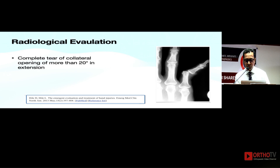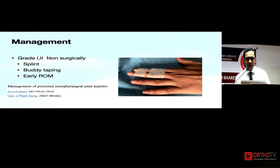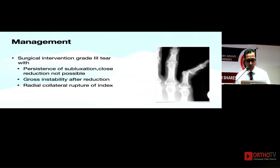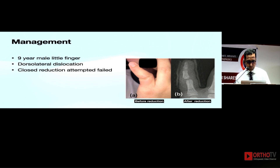Radiologically on X-ray you may find some avulsion fractures and joint subluxation. If you have a complete tear of the collateral you will have complete dislocation. Coming to the management: grade 1 and grade 2 are preferably treated non-surgically because they are stable. If you reduce them, a grade 2 injury will be stable in full flexion and full extension and can be treated very well with taping. You can start range of motion as early as when pain and swelling decreases. But grade 3 tears, or those not reducing due to entrapment or unstable after reduction, require surgery.